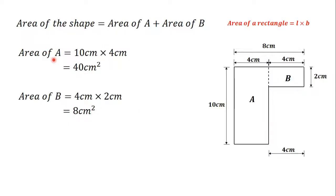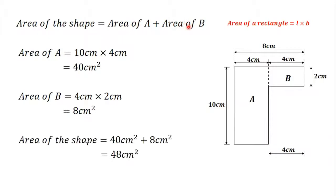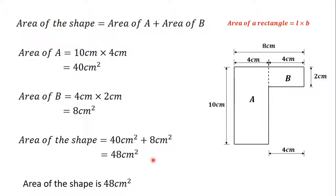We now have the area of shape A and the area of shape B. The total area of this shape is equal to the area of shape A plus the area of shape B. Area of A is 40 centimeters squared and area of B is 8 centimeters squared, so adding them gives 48 centimeters squared. The area of this shape is 48 centimeters squared. Whenever you have a composite shape, split it into regular shapes, find their areas separately, and add them together.